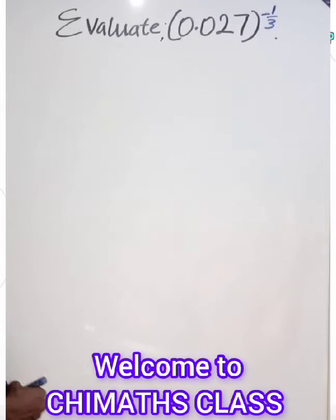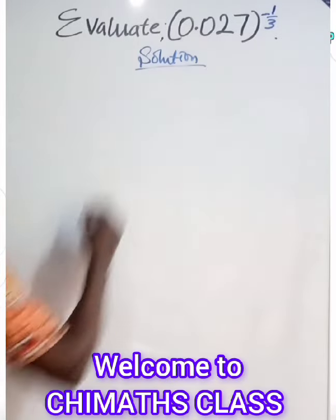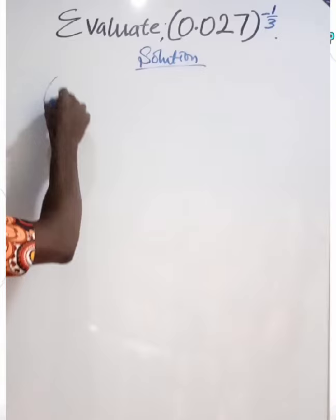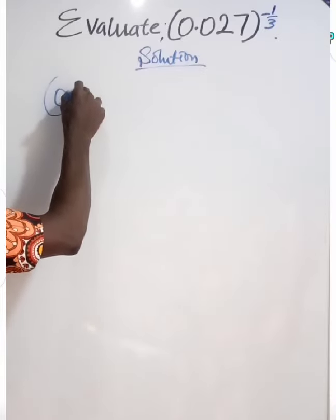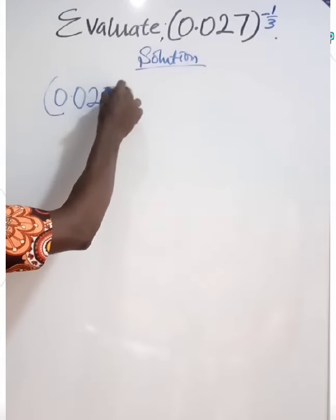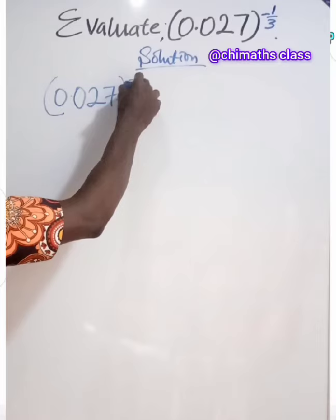Hi, welcome to Chima class. To evaluate all brackets 0.027, all raised to the power minus 1 over 3...